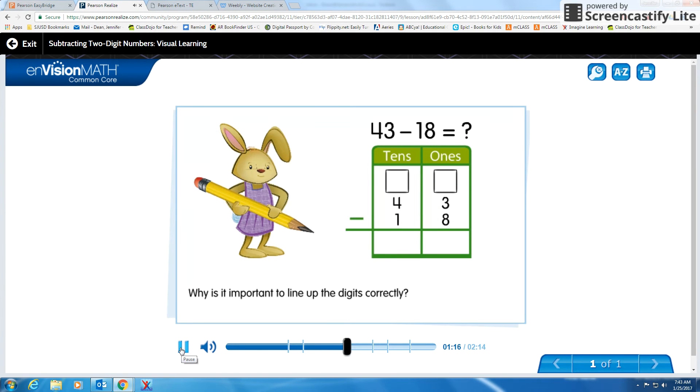Why is it important to line up the digits correctly? You must subtract ones from ones and tens from tens.